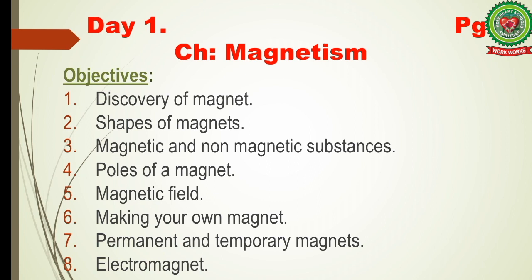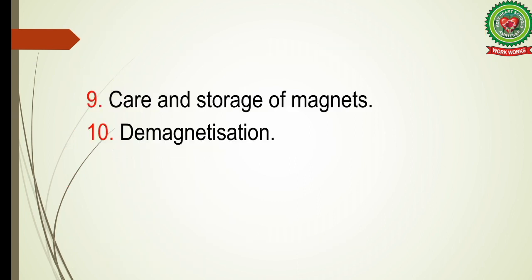Before proceeding with the chapter, I would like to discuss the various objectives. These include: discovery of magnet, shapes of magnets, magnetic and non-magnetic substances, poles of a magnet, magnetic field, making your own magnet, permanent and temporary magnets, electromagnet, care and storage of magnets, and demagnetization. By the end of this chapter, you will be able to answer all questions regarding these concepts.